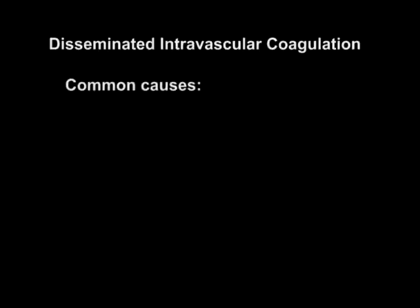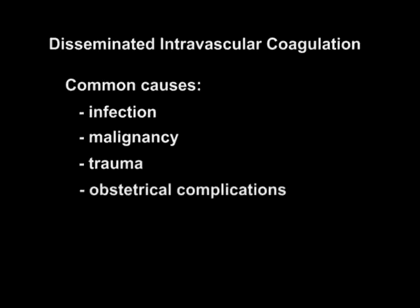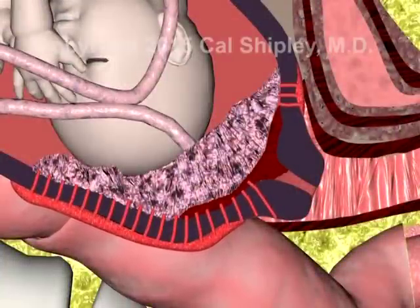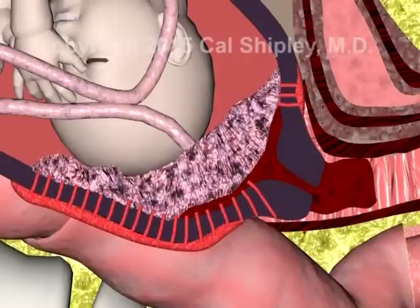Common causes of DIC in North America include infection, malignancy, trauma, and obstetrical complications. For the purposes of this presentation, I am going to use acute placental abruption with hemorrhage as the underlying cause of DIC.